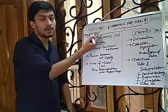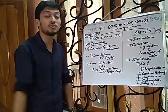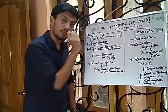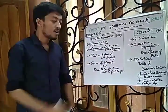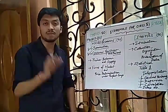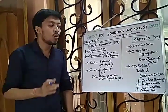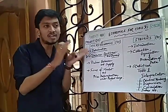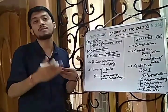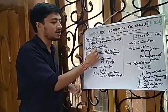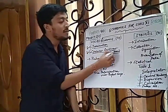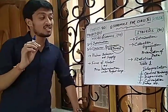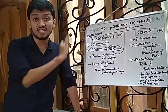After getting an introductory idea about microeconomics, we will jump to the next topic: consumer equilibrium and demand. Consumer equilibrium is a separate topic about how a consumer reaches an optimum situation. Demand is also a separate topic — a very interesting and very important core topic in economics.